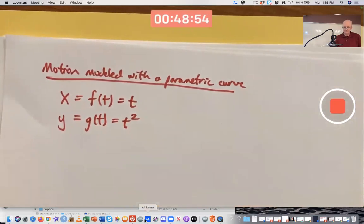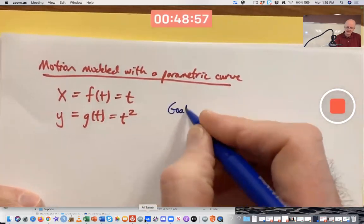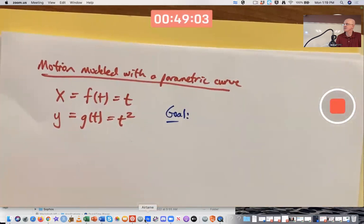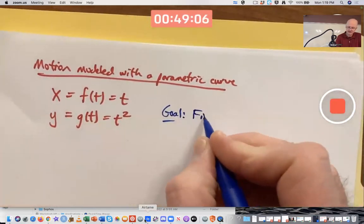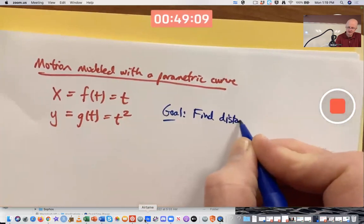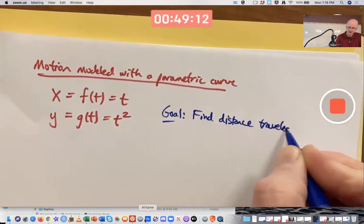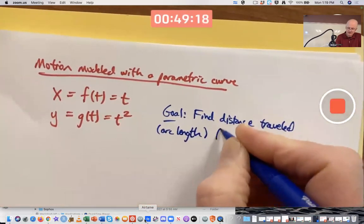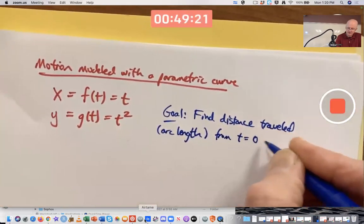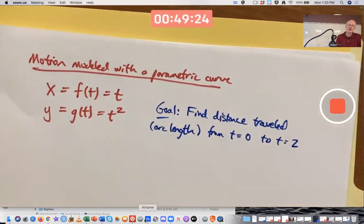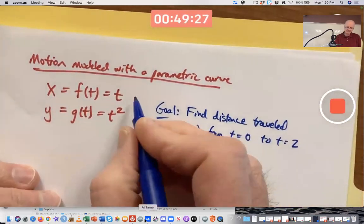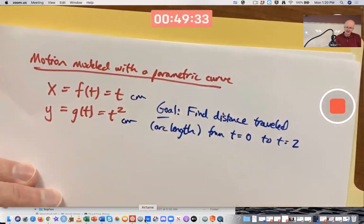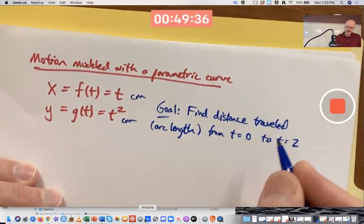And let's say our goal is to find the distance traveled along this parametric curve, say from time zero to time two. Find the distance traveled, also called the arc length, from t equals zero to t equals two. And let's say position is measured in centimeters and time is measured in seconds.